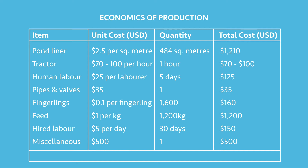The feeding conversion ratio of the fish is 1.5, meaning if you want to harvest your fish with an average weight of 500 grams, you need 750 grams of food per fish. For our case of 1,600 fish, we shall require 1,200 kilograms of feed until maturity. The average cost of one kilogram of feed is one dollar, so in our case we shall require 1,200 US dollars.